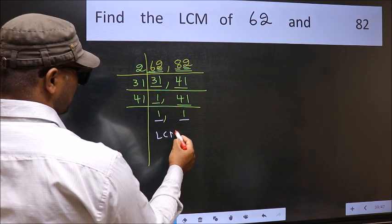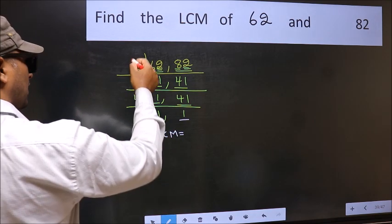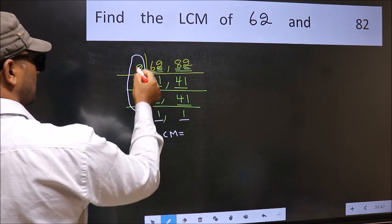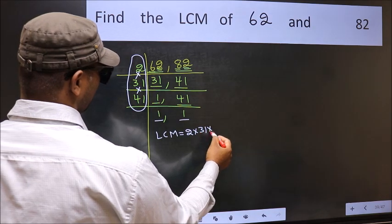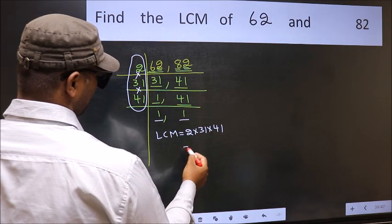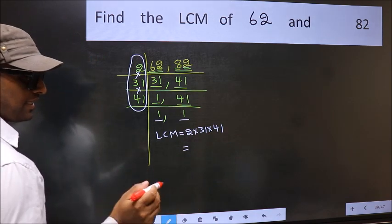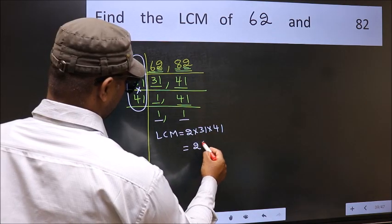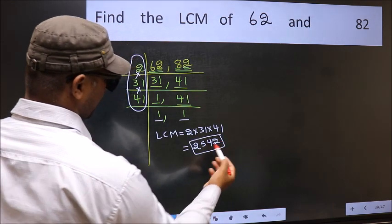So our LCM is the product of these numbers: 2 times 31 times 41. When we multiply these numbers, we get 2542 as our LCM.